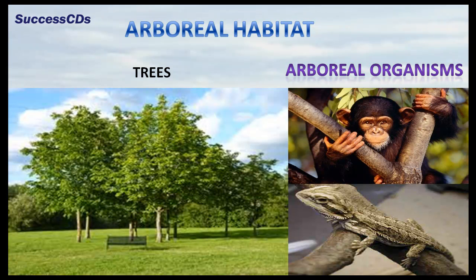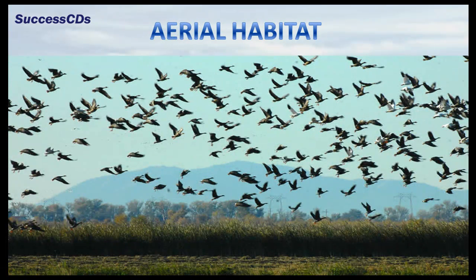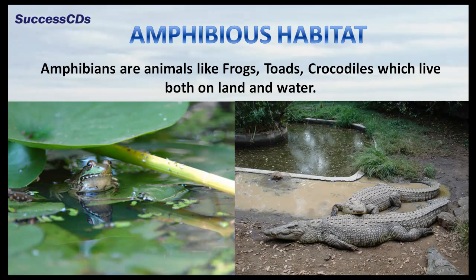Arboreal habitats include habitats on trees. Organisms that live on trees like monkeys, lizards, etc., are arboreal animals. Birds have aerial habitat, as they use the sky or air for their activities. Some animals like frog, toad, and crocodile live both on land and in water. They are called amphibians and the habitat is called amphibious habitat.